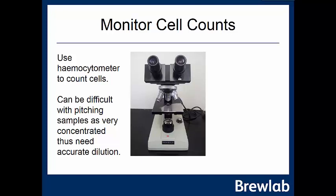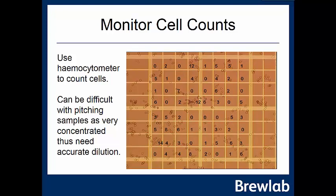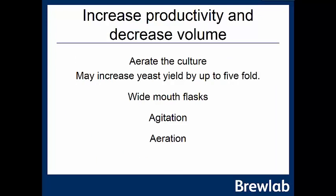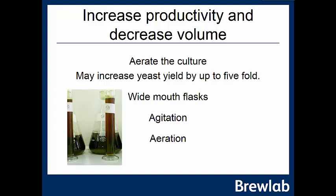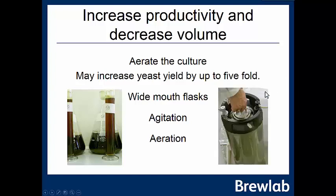We can monitor cell counts using a microscope at around 400× magnification with a haemocytometer, though this can be difficult with concentrated or flocculated pitching yeast. We can increase productivity by aerating cultures — shaking either continuously or intermittently — which can increase yield by up to five times. Wide-mouth flasks provide good air exposure and agitation. We'd eventually scale up into large conical flasks for bulk production before pitching into a commercial or 20-litre brew.